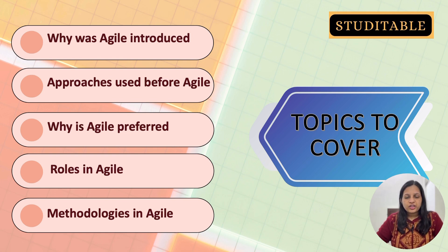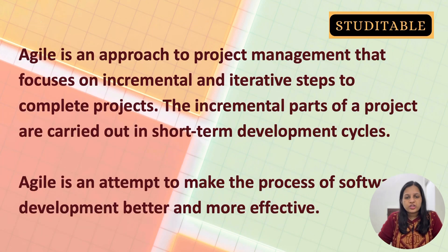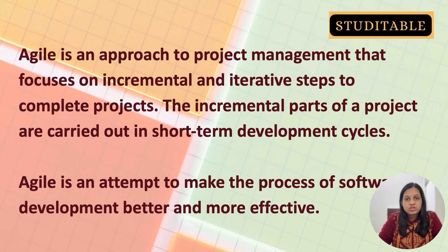Agile became popular around the 2000s and 2002. Before that, the more preferred method was the waterfall model. Agile was introduced as an approach to project management that focuses on incremental and iterative steps to complete projects. Before Agile came into the picture, the more popular method was the waterfall model.